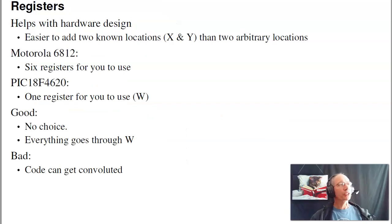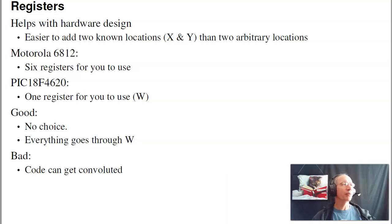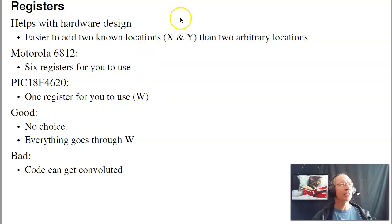There's also a thing called registers. Registers make it easy for the hardware designer — it's much easier to know that when you do an add command, you're adding from two specific spots of memory rather than any two spots. Different processors have different numbers of registers. The 6812, for example, has six registers. The PIC only has one — the W register. That makes life simple because everything goes through W. It also makes things sometimes annoying, because if you need two registers, too bad — the logic can get convoluted when you're limited to one register.